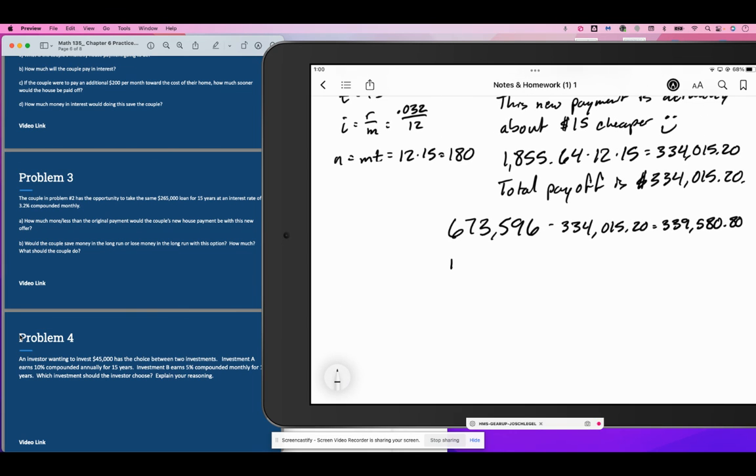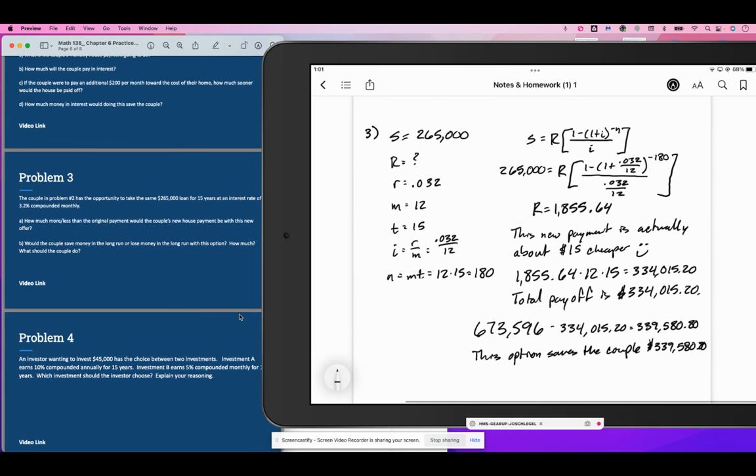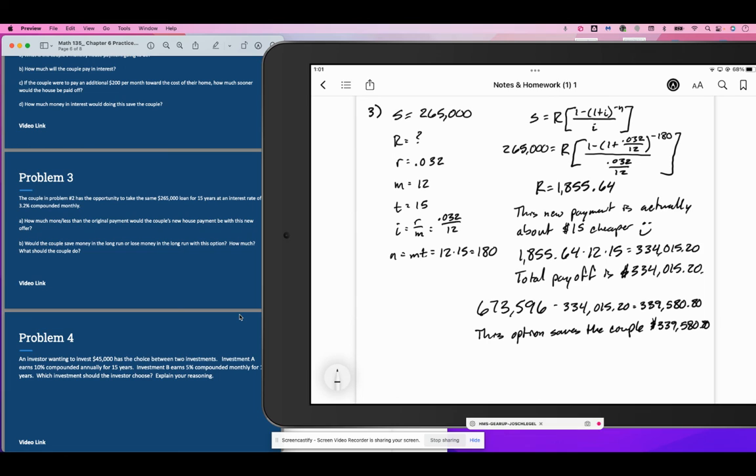This option saves the couple $339,580.80. Isn't that insane? What should the couple do? Take the 15-year loan. And I would say the same thing to you: if you get the chance, try to get your house paid off with a 15-year loan.